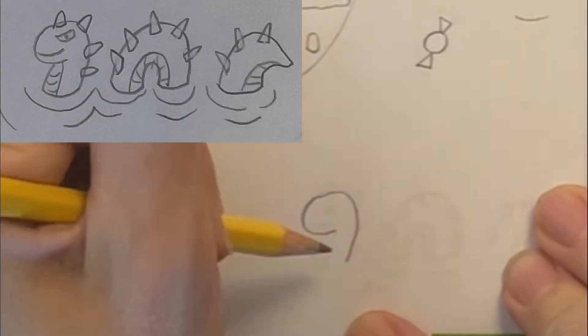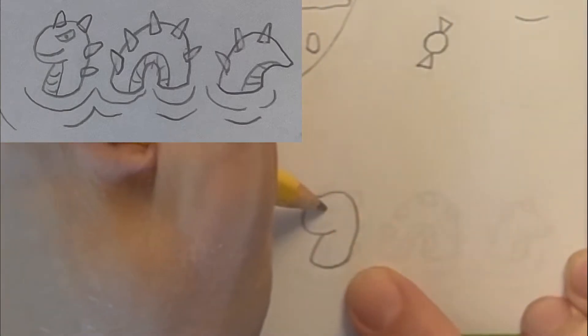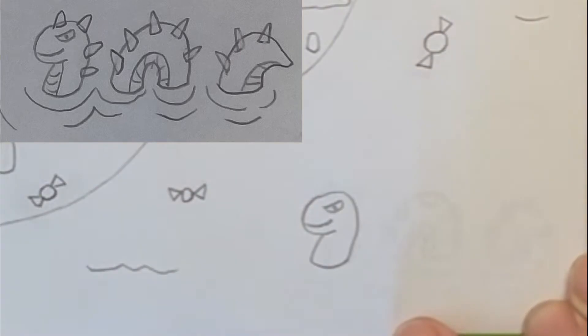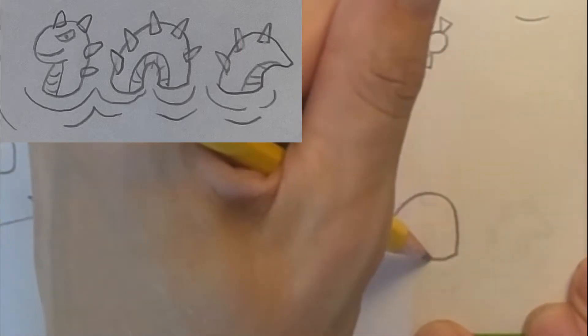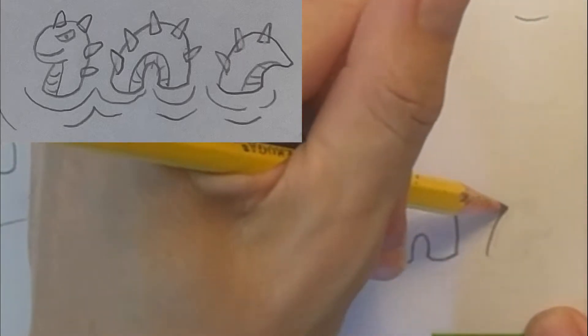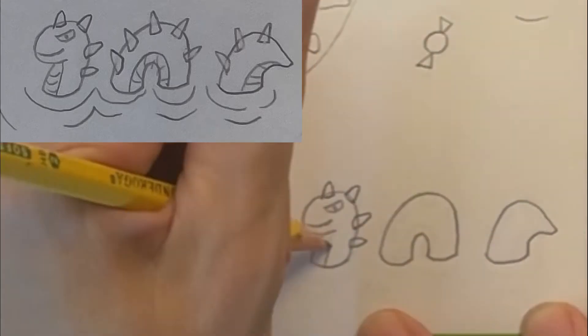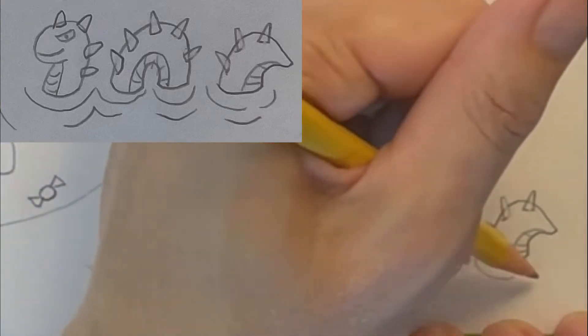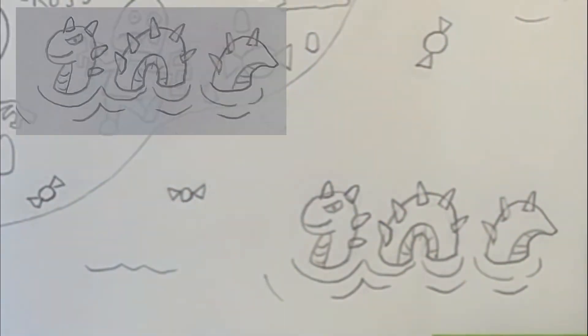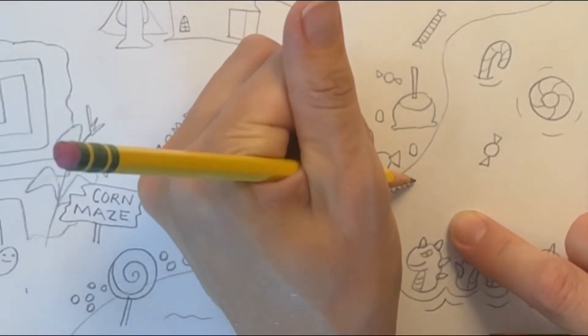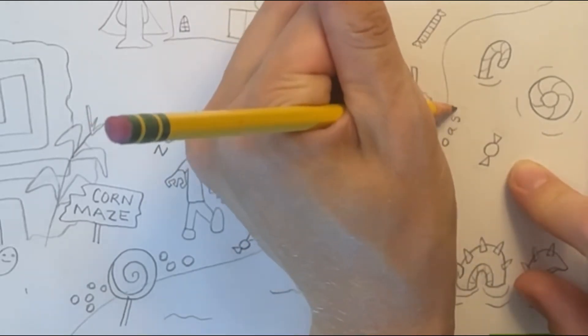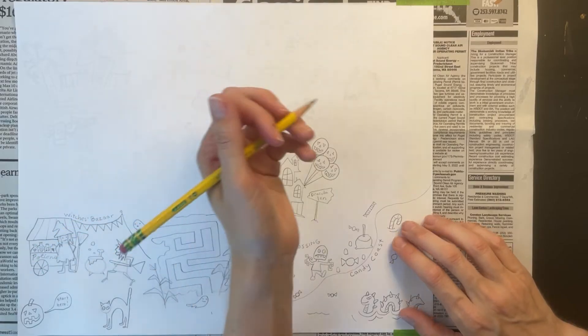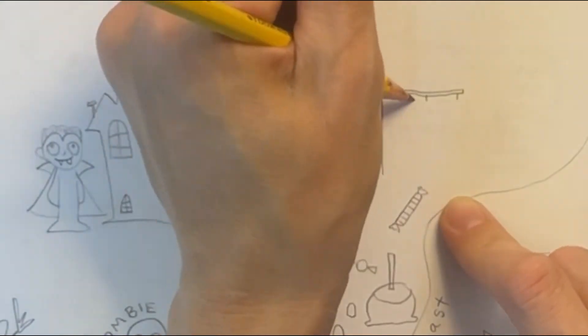Now I'm adding a sea serpent in the water. I'm drawing it in three sections: the head, the middle of the body, and the tail sticking out of the water. I'm giving it some spikes. I'm adding some tiny waves in the water around it. I'm labeling this area by writing Candy Coast.